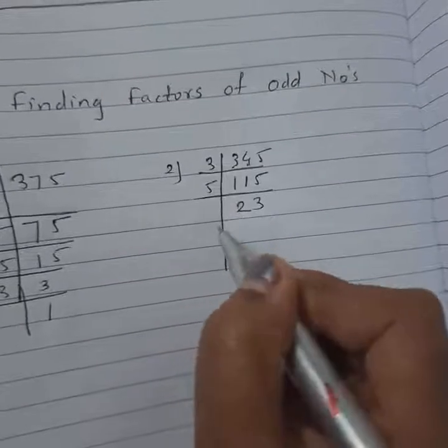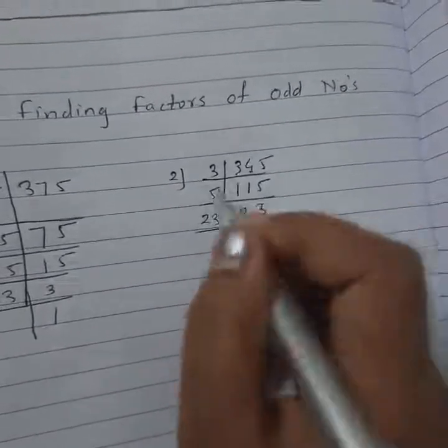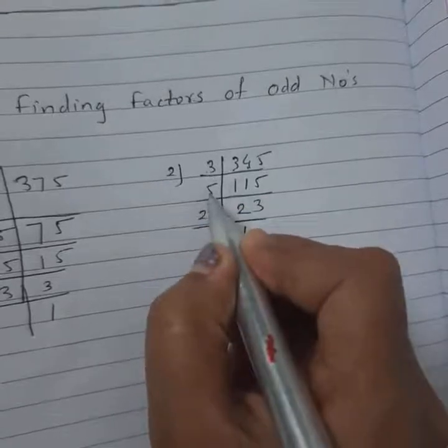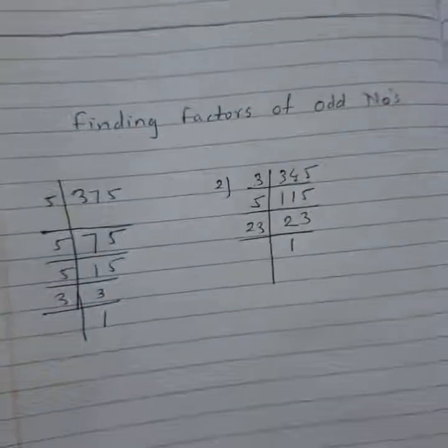23 is divided by itself: 23 times 1 is 23. Here I used the 3's divisibility rule at the first step and the 5's divisibility rule at the second step. Thank you.